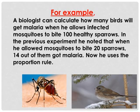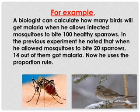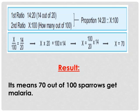Let's see an example using the proportion rule. A biologist wants to calculate how many birds will get malaria when infected mosquitoes bite 100 healthy sparrows. In a previous experiment, he noted that when mosquitoes bit 20 sparrows, 14 out of them got malaria. From this, he gets two ratios: 14:20 and x:100. Using the proportion rule, the result is 70 out of 100 sparrows get malaria.